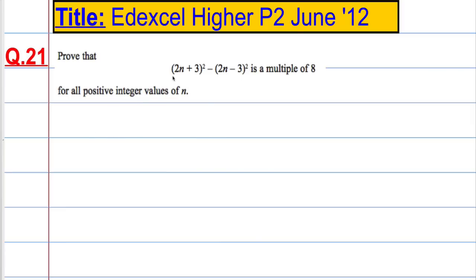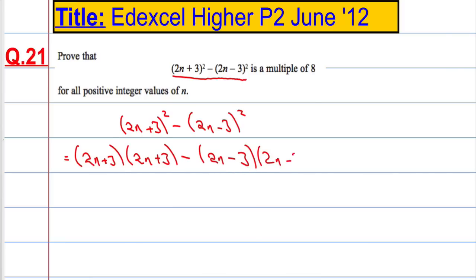What I'm going to do is just expand this out and tidy it up and see where that takes us. So let's write it down. We've got (2n+3)² minus (2n-3)². That equals (2n+3) times (2n+3), and I need to subtract (2n-3) times (2n-3).